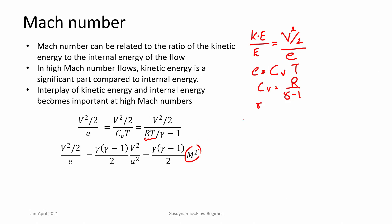The ratio of kinetic energy to internal energy is proportional to Mach number squared. So if Mach number increases significantly, kinetic energy becomes a very significant fraction of internal energy. If there are changes in kinetic energy — changes in Mach number or velocity — a large part of that energy will start interacting with internal energy, creating a close coupling between kinetic and internal energy in compressible flows.